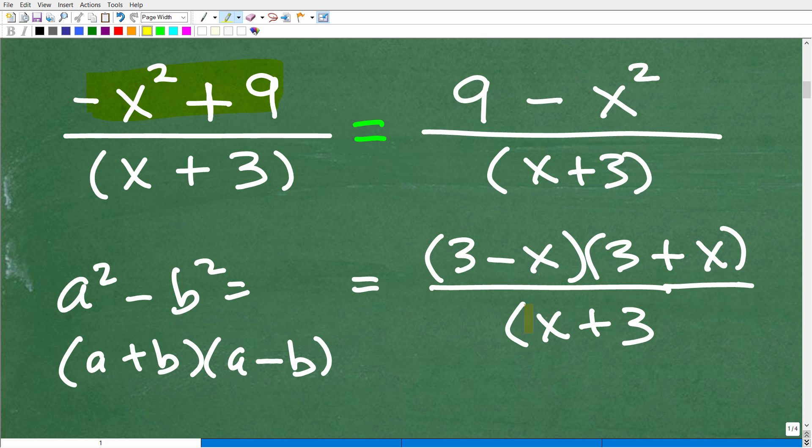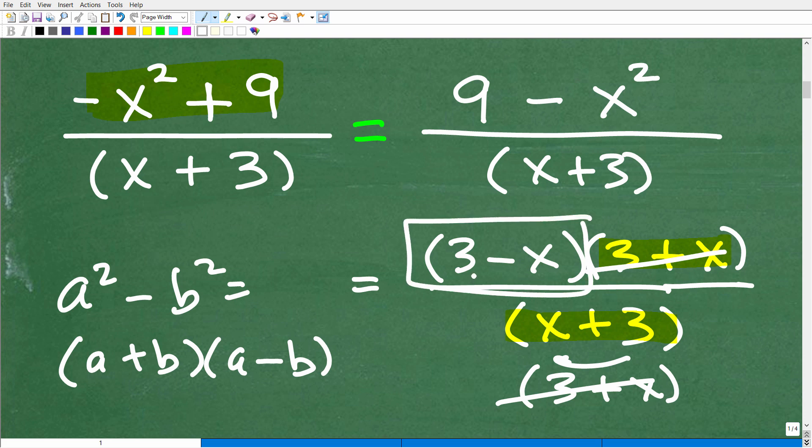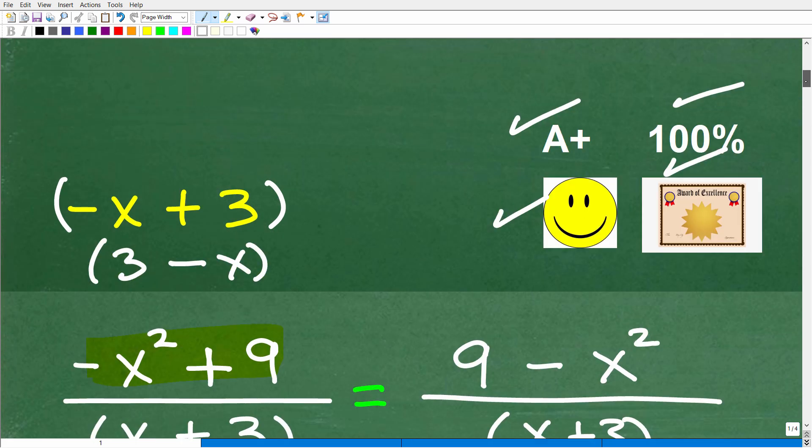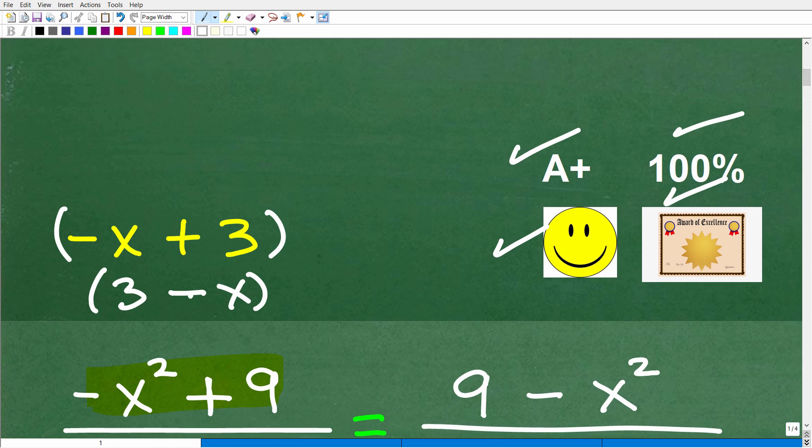To factor the numerator, we're going to have 3 minus x times 3 plus x, and that's all over x plus 3. These factors may not look perfectly alike, but they are indeed the same. 3 plus x is the same thing as x plus 3. So these are equivalent, so we can cross-cancel these, and we're left with 3 minus x, or negative x plus 3. It's important that you recognize both answers.